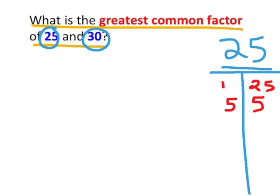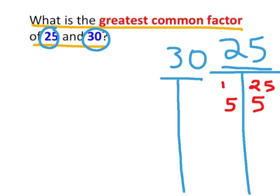Now we are going to find all of the factors of 30. Starting with our smallest factor, we know that 1 times 30 is equivalent to 30, so both 1 and 30 are factors of 30. If we look at this last digit — it's a 0 — from our divisibility rules, we know that any number ending in 0 has a factor of 10. So 3 times 10 is equivalent to 30.